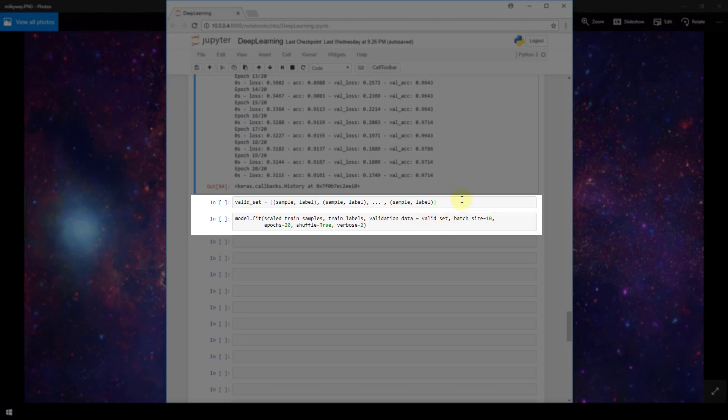Now, I don't actually have the validation set created, but this is the format that Keras would expect. It would expect a list of tuples, and each tuple would be the actual sample, the actual data point, and the label. So here I've just illustrated that within this list we have a sample and a label, and then another sample and another label, and that would make up the entire list.